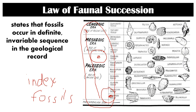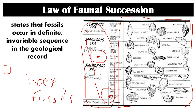The index fossils commonly used include shells, because they were widespread and populous when they were alive, easy to find, and their fossils are well-preserved. We use these to identify the age of rocks. Sometimes we compare rock layers: if one rock layer contains an ammonite, and another rock layer in a different position or location also contains an ammonite, then we can say these two rock layers are the same age.